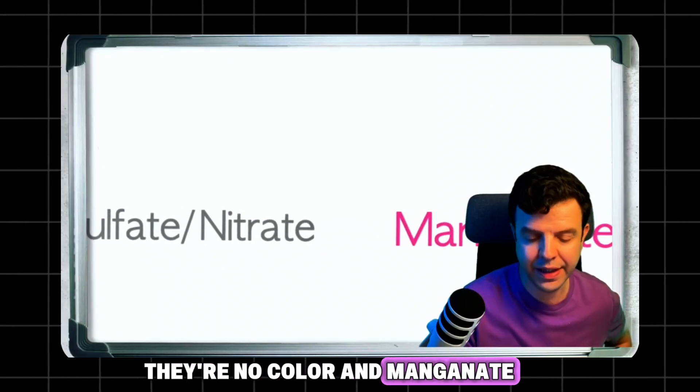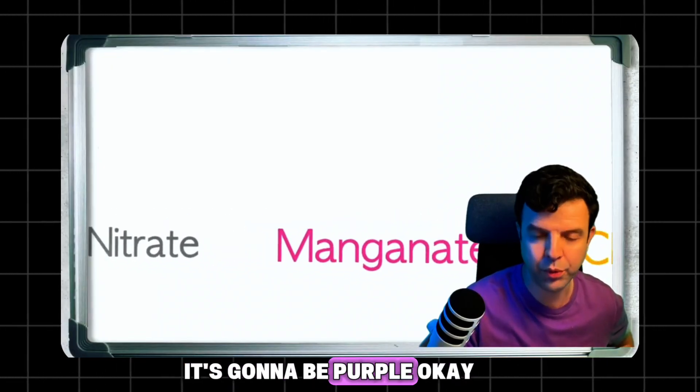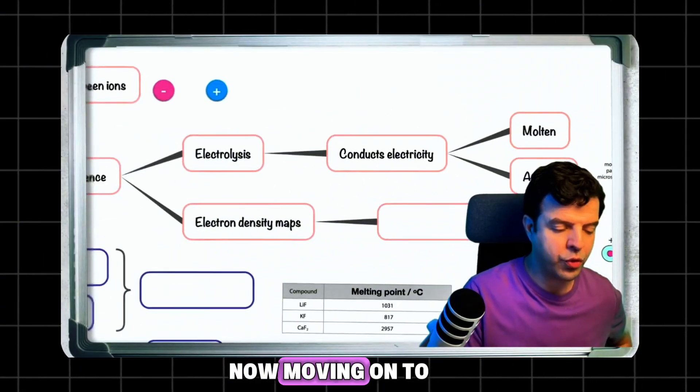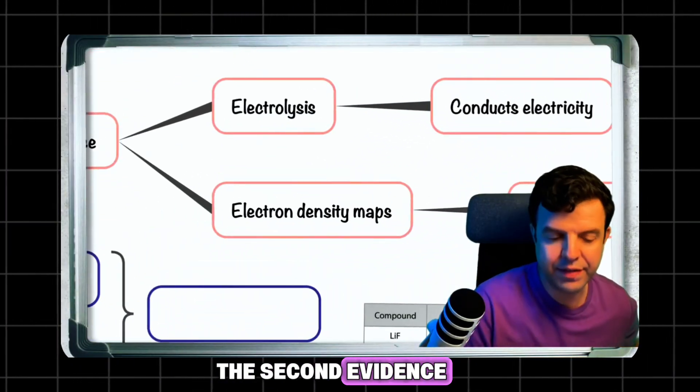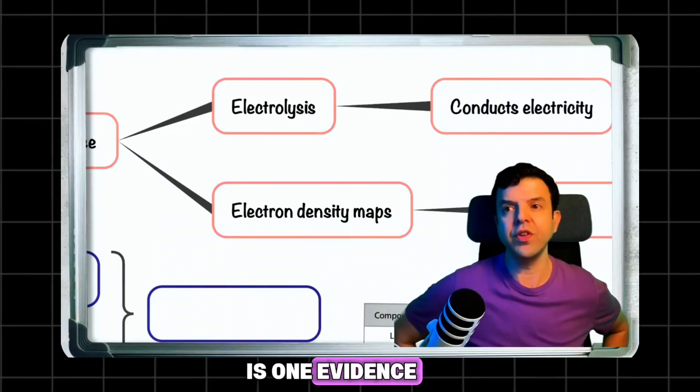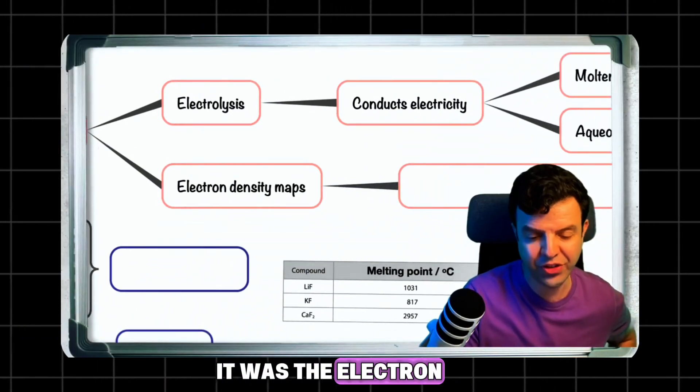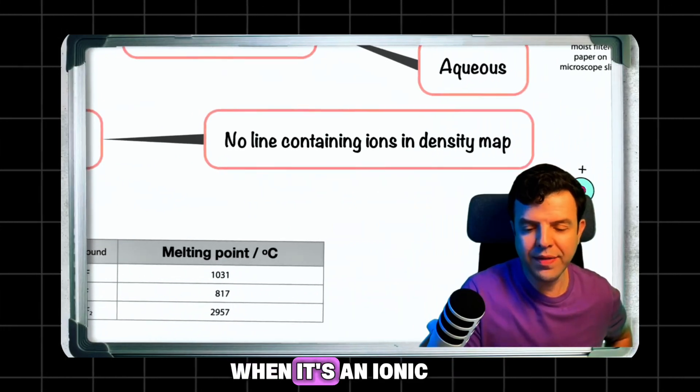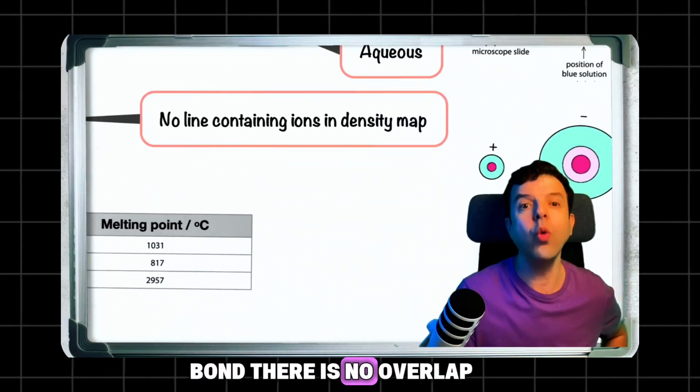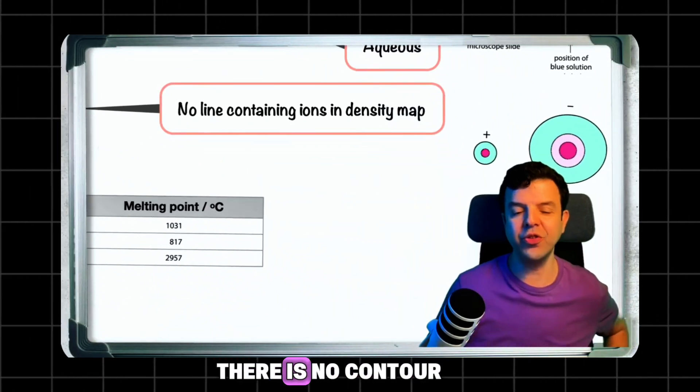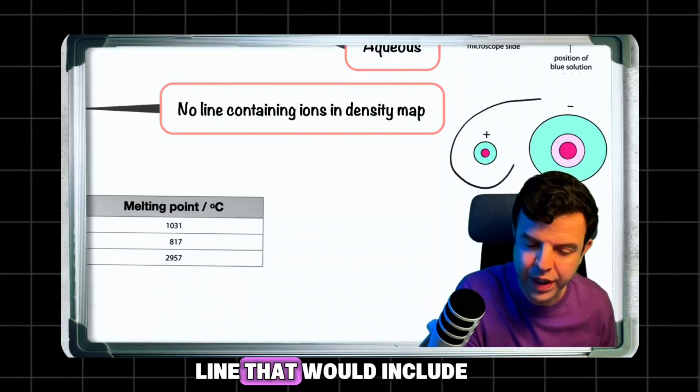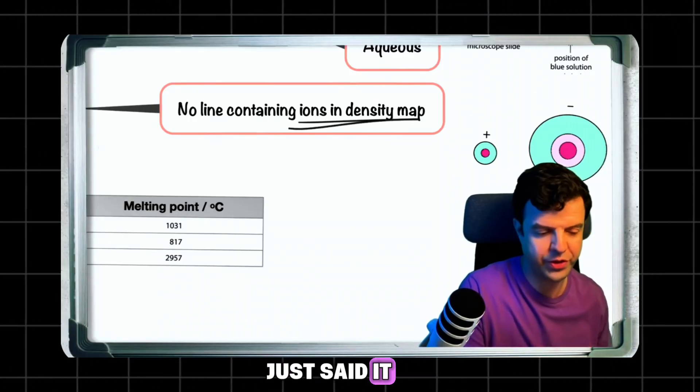Moving on to the second evidence - electrolysis is one evidence of ionic bonding, and the electron density map is the other. Remember, with an ionic bond there is no overlap, no contour line that includes both ions.